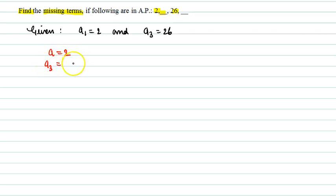A3 is equal to A plus 2D. Why have we written this? Because we know that AN equals A plus (N minus 1) into D. This is a formula we will use.